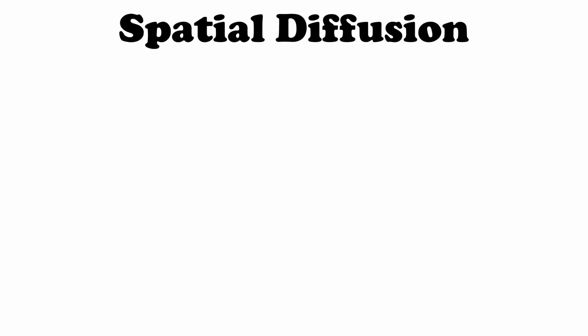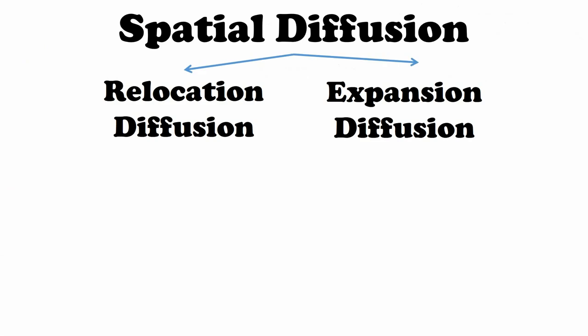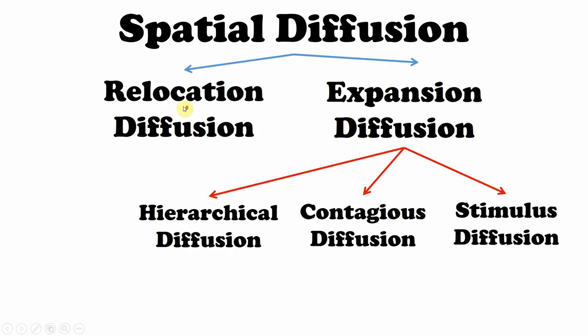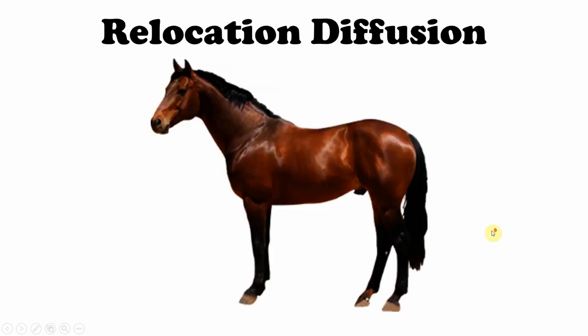Next: diffusion. Diffusion can be broken up into some different categories. The two biggest would be relocation and expansion. Relocation is what we'll look at first. Expansion has three subsets: hierarchical, contagious, and stimulus. Let's go to relocation.